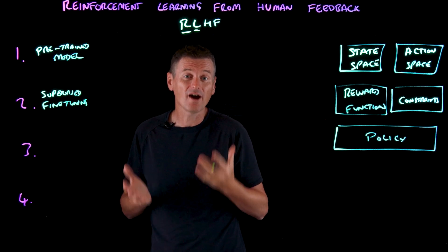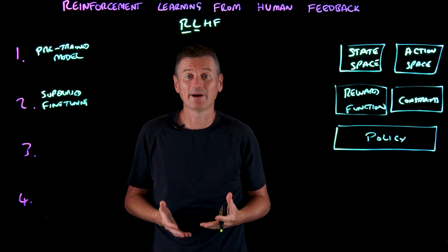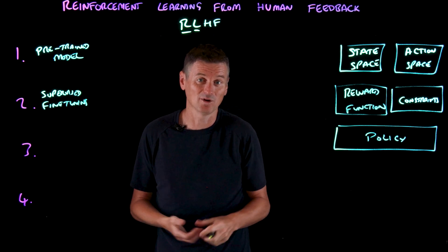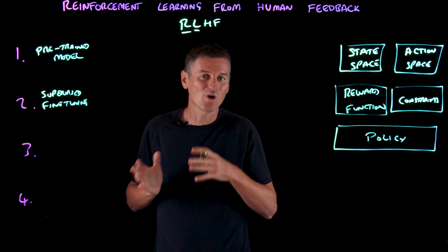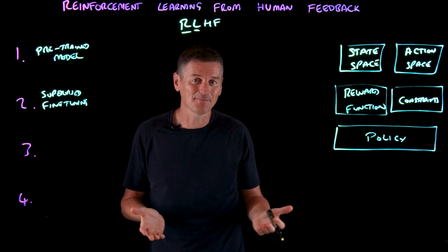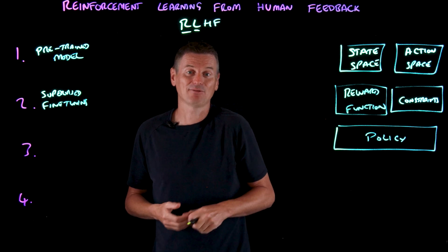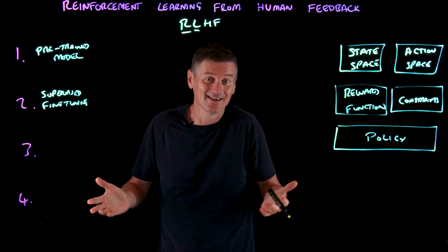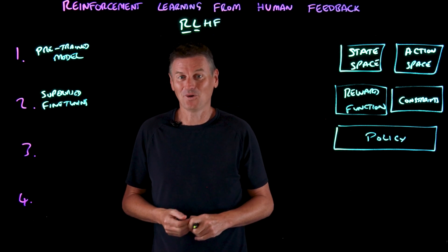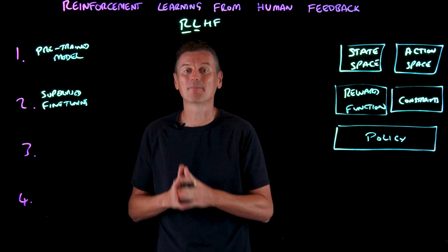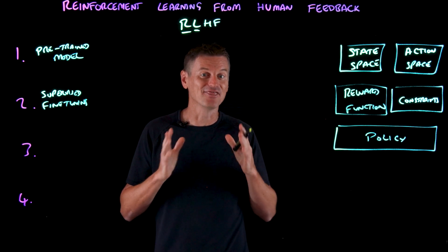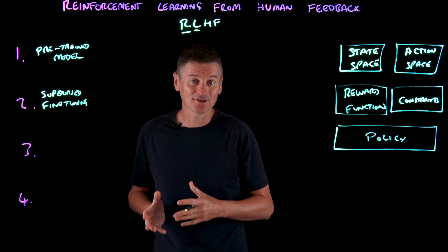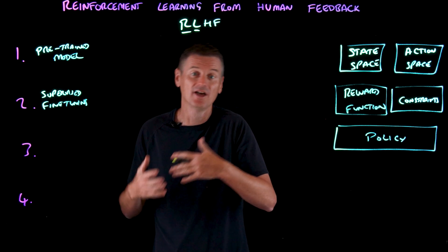Supervised fine-tuning is used to prime the model to generate its responses in the format expected by users. The LLM pre-training process optimizes models for completion — predicting the next words in a sequence. Sometimes LLMs won't complete a sequence in a way the user wants. For example, if a user's prompt is 'teach me how to make a resume,' the LLM might respond with 'using Microsoft Word' — valid, but not aligned with the user's goal. Supervised fine-tuning trains models to respond appropriately by having human experts create labeled examples for different use cases like question answering, summarization, or translation.